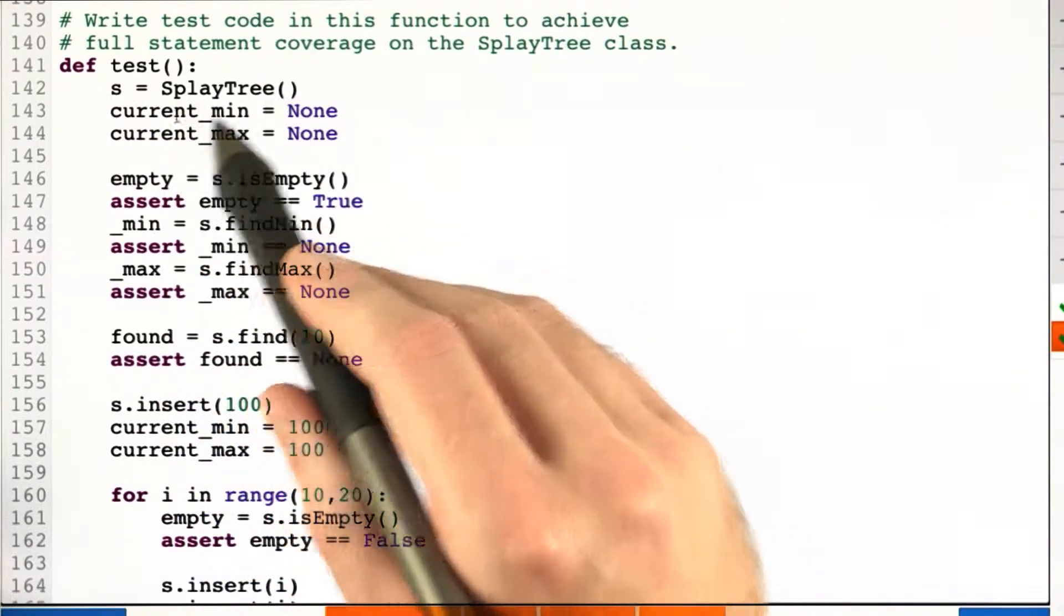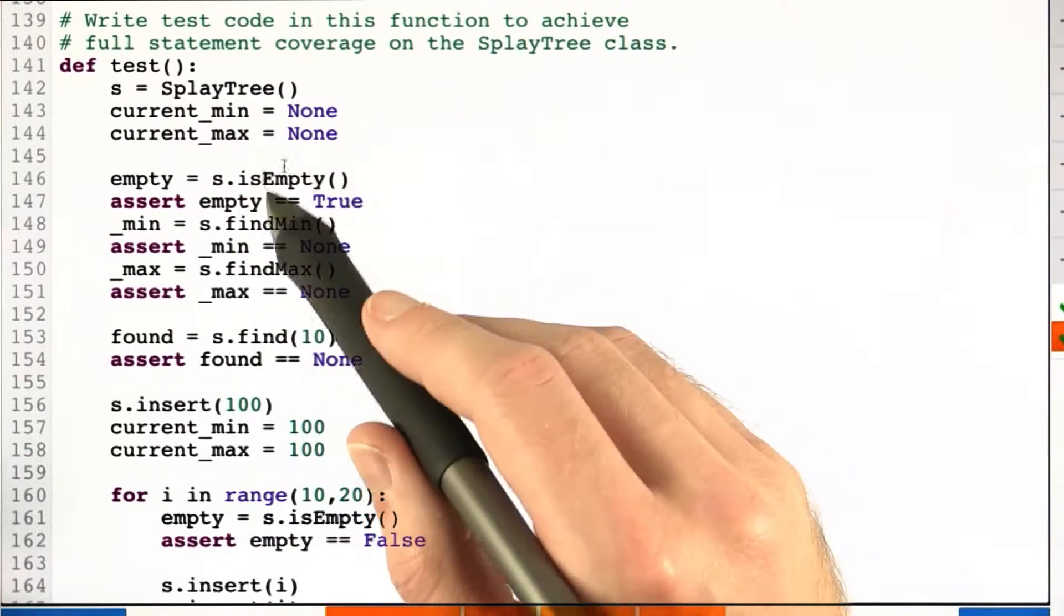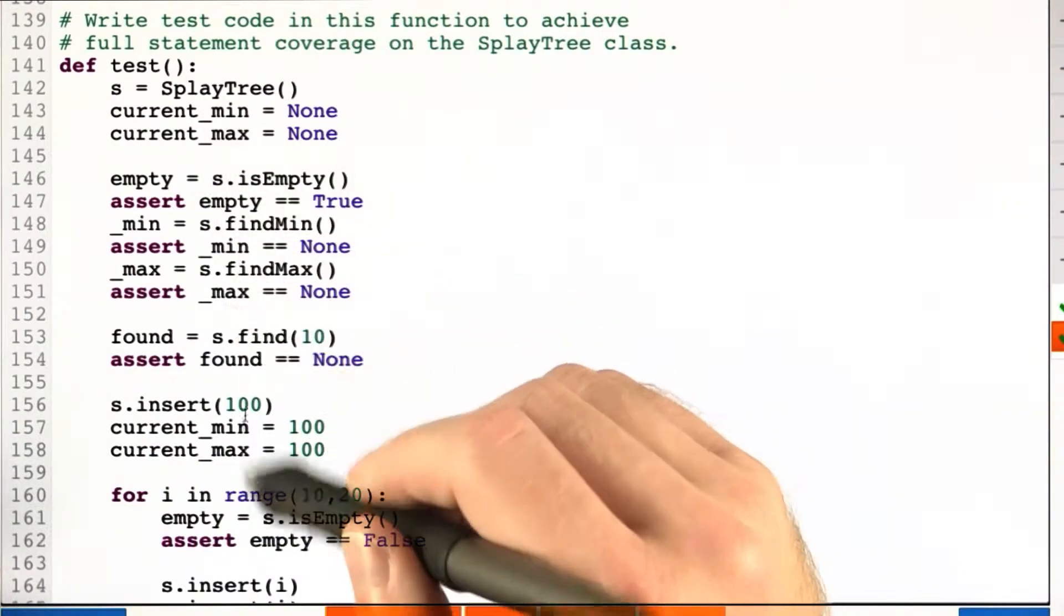So we start off by initializing the splay tree, and we have a few variables here to keep track of the current min and max as we are going through.